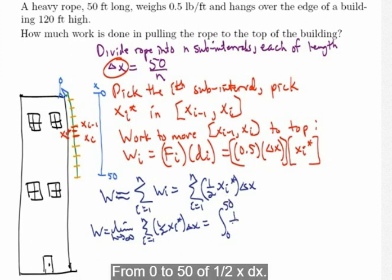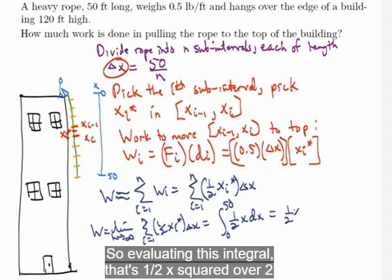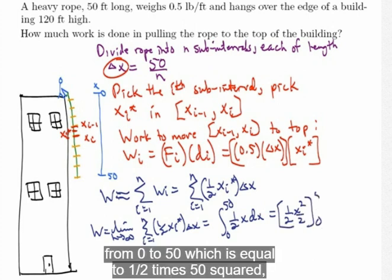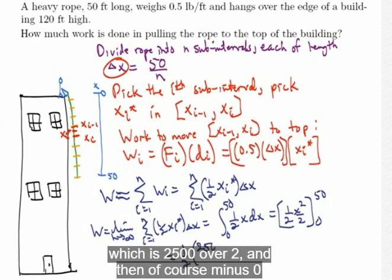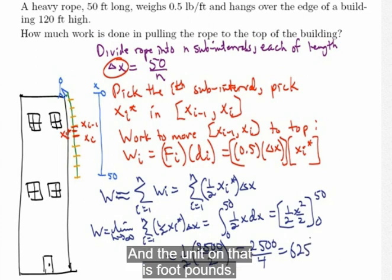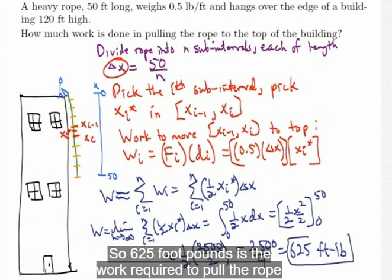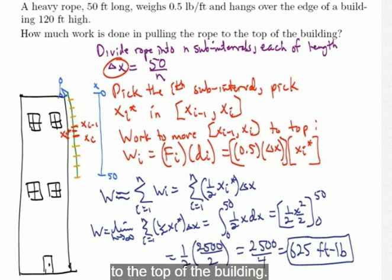From 0 to 50 of one-half x dx. So evaluating this integral, that's one-half x squared over 2 from 0 to 50, which is equal to one-half times 50 squared, which is 2,500 over 2, and then minus 0 when I put the 0 in there. That's 2,500 over 4, which is 625. And the unit on that is foot-pounds. Our distance was in feet, and our force was in pounds. So 625 foot-pounds is the work required to pull the rope to the top of the building.